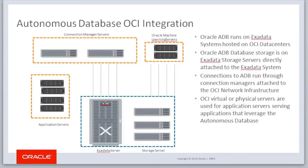Oracle Autonomous Database runs on Exadata systems hosted on Oracle Cloud Infrastructure data centers. Oracle Autonomous Database storage is on Exadata storage servers, which are directly attached to the Exadata compute nodes. A complete Autonomous Ecosystem also consists of dedicated OCI servers that run the Oracle Machine Learning environments. Oracle Machine Learning environments can be accessed from the Autonomous Database Cloud Console or directly through the URL provided when an OML user gets provisioned.